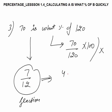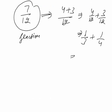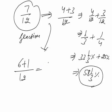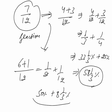To convert 7 by 12 into percentage, I can write it as 4 plus 3 by 12, which is 4 by 12 plus 3 by 12, that is 1 by 3 plus 1 by 4. I know 1 by 3 is 33⅓ percent and 1 by 4 is 25 percent, so the answer is 58⅓ percent. Alternatively: 6 plus 1 by 12 gives 6 by 12 is half (50 percent) plus 1 by 12 which is 8⅓ percent, again giving 58⅓ percent.